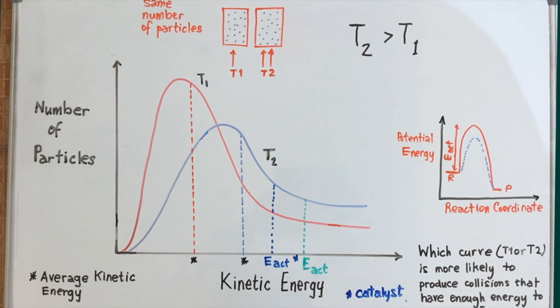But for a given number of particles at temperature T1, the Maxwell Boltzmann curve shows this kind of asymptotic spread. Or to put it simply, the curve is skewed towards the y-axis, with this peak here.